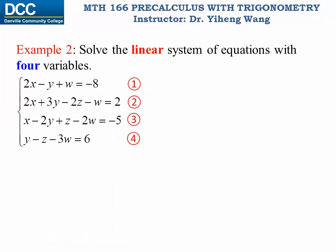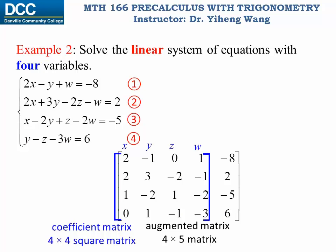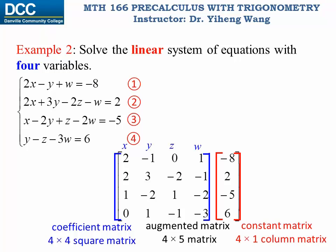Let's look at this example. We're going to solve this linear system with four equations and four variables again using the Gauss-Jordan elimination method. So the first thing to do is to organize all the coefficients and constants into its augmented matrix. This is a 4 by 5 matrix. There are four rows — each row corresponds to one of the equations in the original system — and the first four columns represent the coefficients for the variables x, y, z, and w respectively. As you can see, if in any of the original equations a variable is missing, then a zero is used as the entry to fill up the space. This augmented matrix is made up of a 4 by 4 square coefficient matrix and a 4 by 1 column constant matrix.